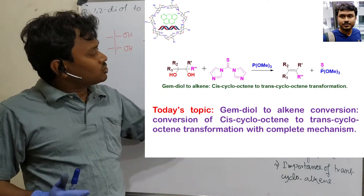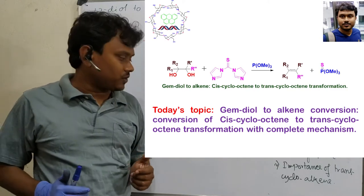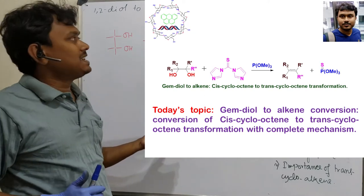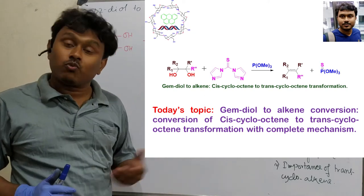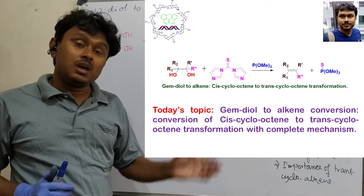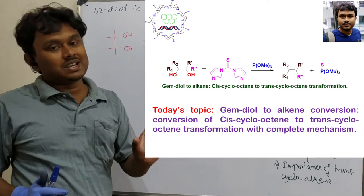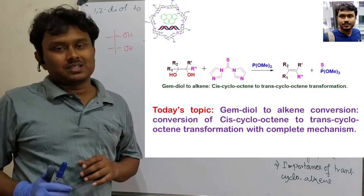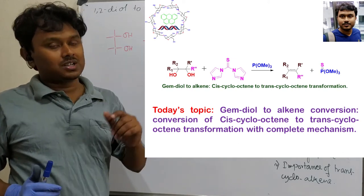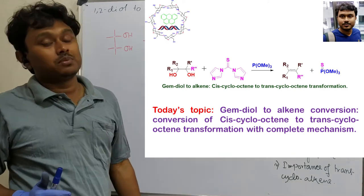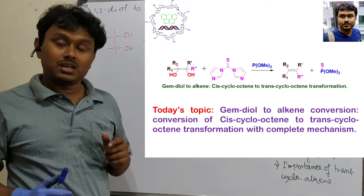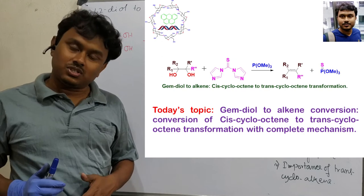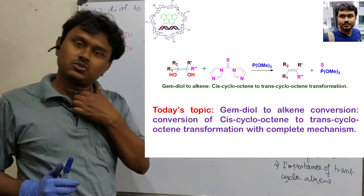Today we will discuss diol to alkene conversion. Today's topic will cover: importance of this reaction, mechanism of this reaction, driving force of this reaction, and at the end, application of this methodology — that is, cis-cyclooctene to trans-cyclooctene conversion. Previously I discussed cis-alkene to trans-alkene; in the case of cyclic systems, getting a trans-alkene is difficult, and this reaction is selective enough to achieve that.